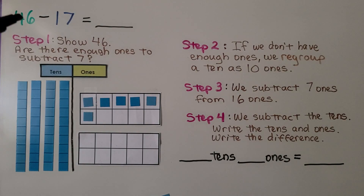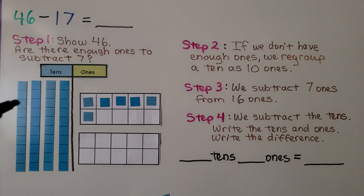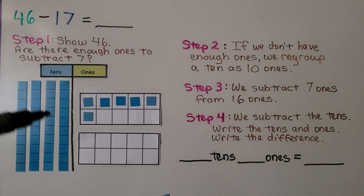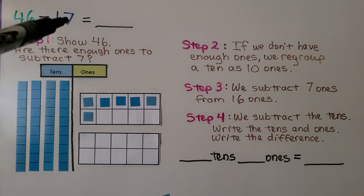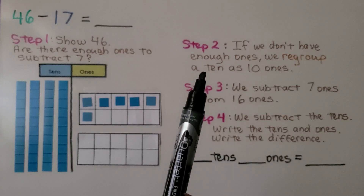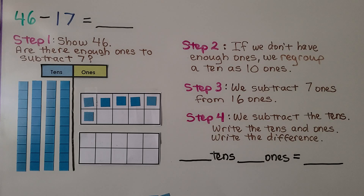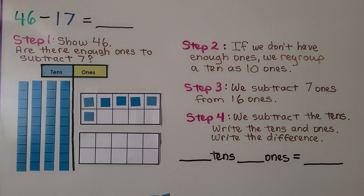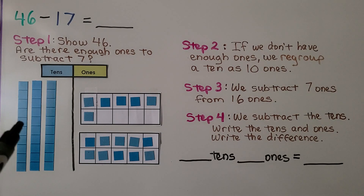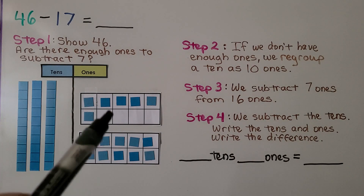Here we have 46 minus 17. For step 1, we show 46 as 4 10s, 6 1s. And we ask ourselves, are there enough 1s here to subtract these 7 1s? If we don't have enough 1s, that's step 2 — we regroup one 10 as 10 1s. Now we have 3 10s, 16 1s.